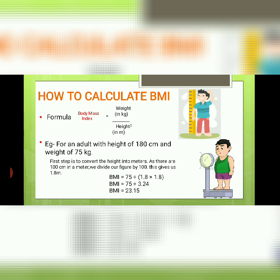Body mass index is a simple calculation using a person's height and weight. The formula is BMI = kg/m², where kg is the person's weight in kilograms and m² is their height in meters squared. A BMI of 25.0 or more is considered overweight, while the healthy range is 18.5 to 24.9.